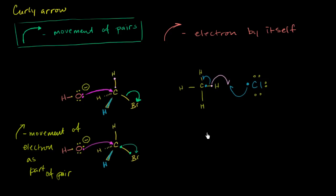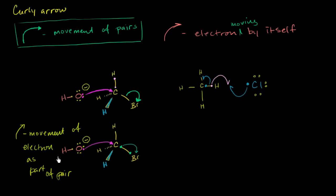When we do free radical reactions, we talk about an electron moving by itself — not part of a pair. We use fish hook arrows for that. Here, we see a bond breaking, but instead of both electrons going to one atom, each electron goes to a different atom. So the electron is moving by itself, and we use the fish hook arrow. The full arrow represents movement of an electron as part of a pair.